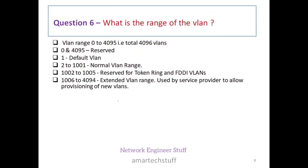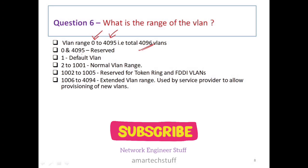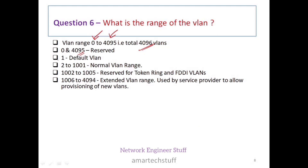Question number 6: what is the range of VLAN? Total VLANs are 4096, so the range starts from 0 to 4095. However, VLAN 0 and VLAN 4095 are reserved VLANs — you cannot use them. VLAN 1 is the default VLAN.